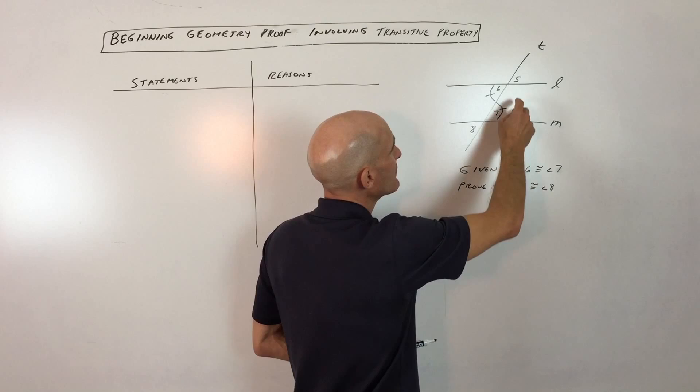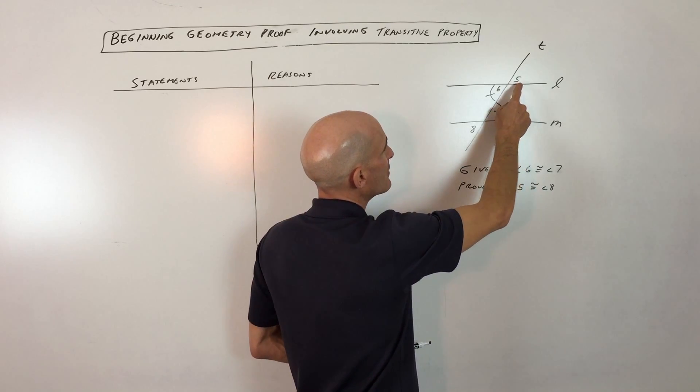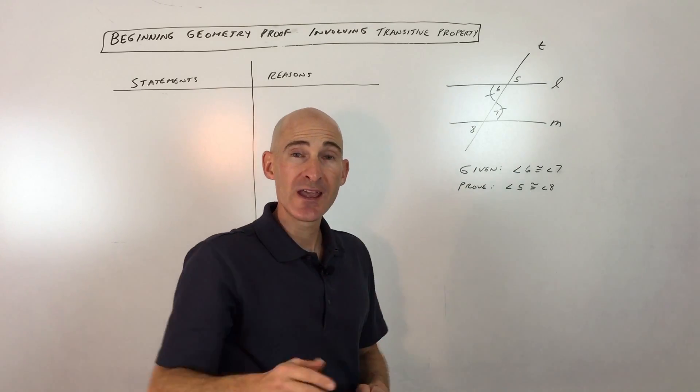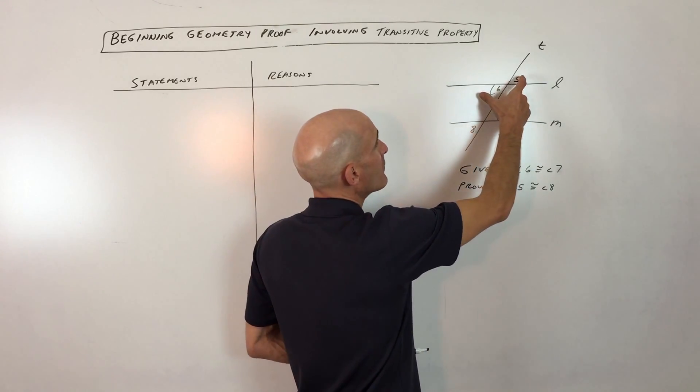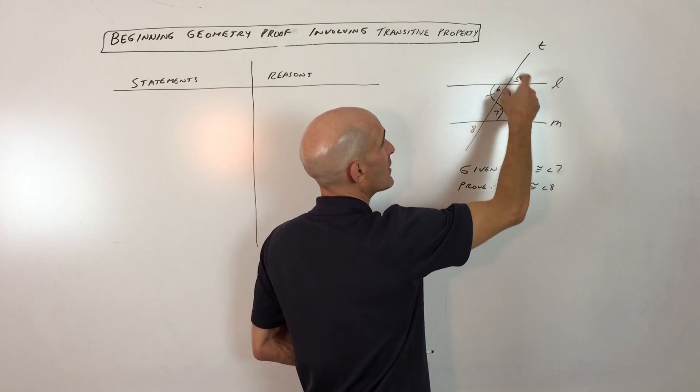And the way we're going to do it here, I think, is that we can see that 5 and 6, see how those angles are right across from each other, those two intersecting lines? They form two pairs of vertical angles.